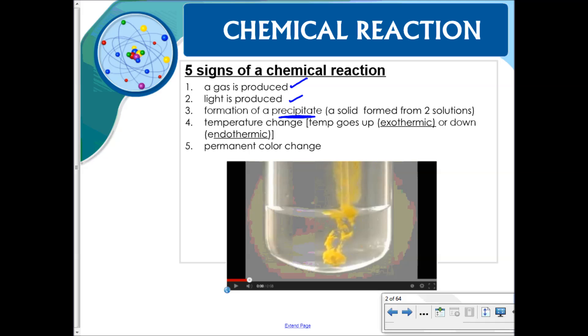Light produced - we showed you this when we burned magnesium at the beginning of the school year. The formation of a precipitate. Remember, the definition of precipitate is a solid formed from two solutions. A temperature change: if you have an increase in temperature it feels warmer, that would be exothermic. If the temperature goes down, you have a decrease in temperature, it feels cooler, that would be endothermic, and of course a permanent color change as seen in this picture here.